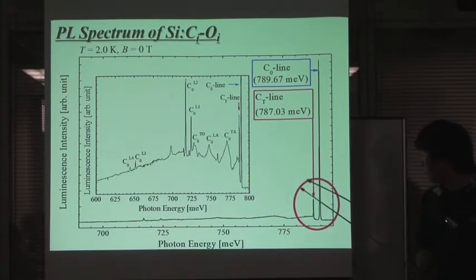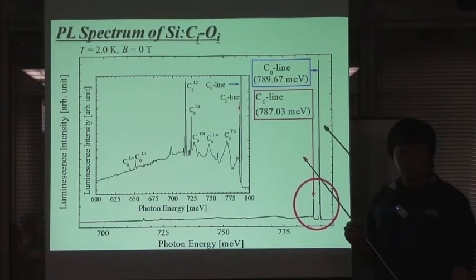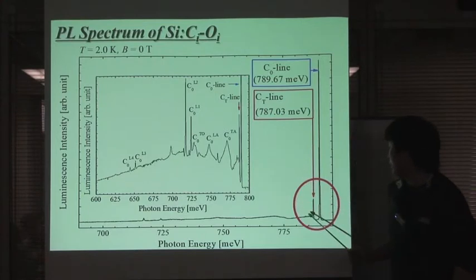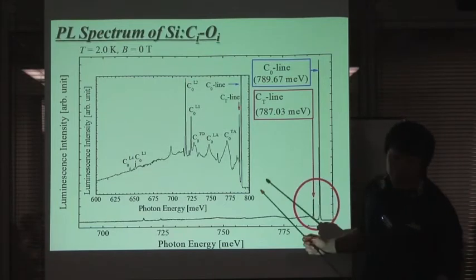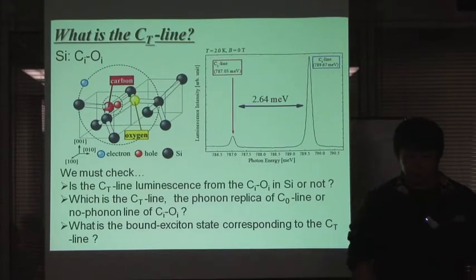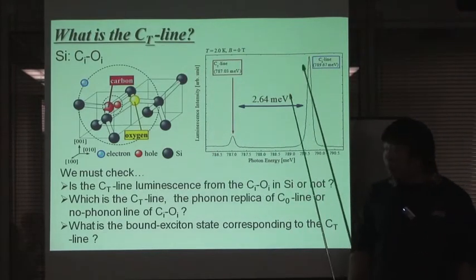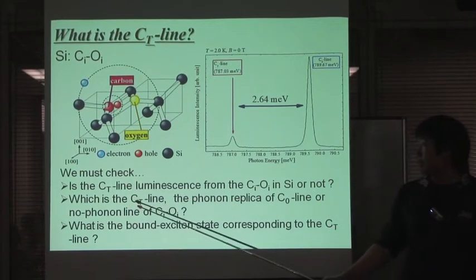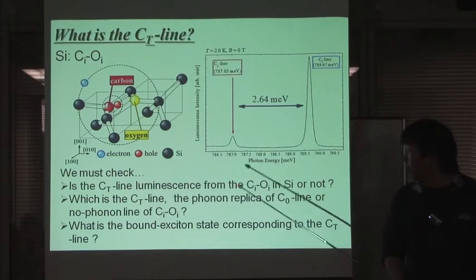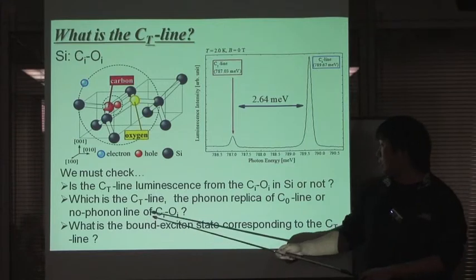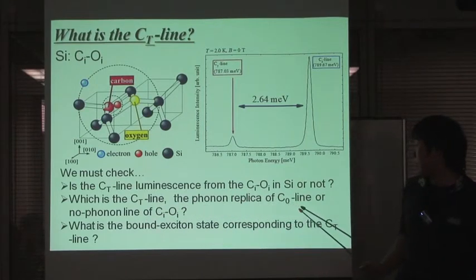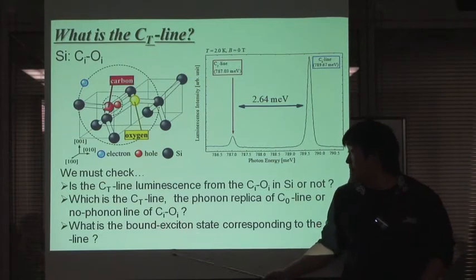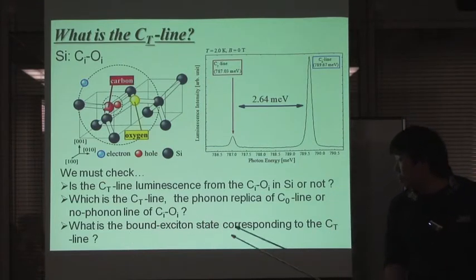However, the CT line has not been reported by previous works. In this presentation, I am explaining that the CT line is luminescence from the triplet state of the exciton bound to carbon-oxygen defects in silicon. To understand the optical properties of the CT line, we must check these issues: Is the CT line luminescence from carbon-oxygen defects? Is the CT line the phonon replica of the C0 line, or a no-phonon line? And what is the exciton state corresponding to the CT line?